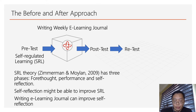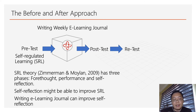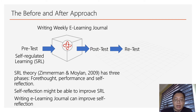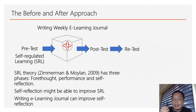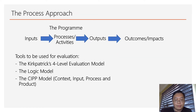Based on my literature review, it seems that self-reflection can or might be able to improve self-regulated learning. Therefore, I created a weekly e-learning journal for students to write, and I want to measure whether this will actually help them to improve their self-regulated learning, because writing an e-learning journal can help them to better self-reflect, and through self-reflection they are able to improve their self-regulated learning. This article has been published and you can find the link in the description below.